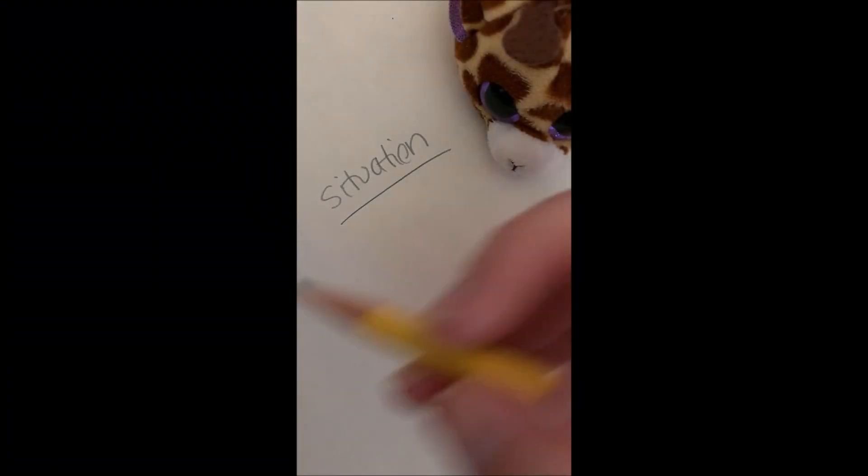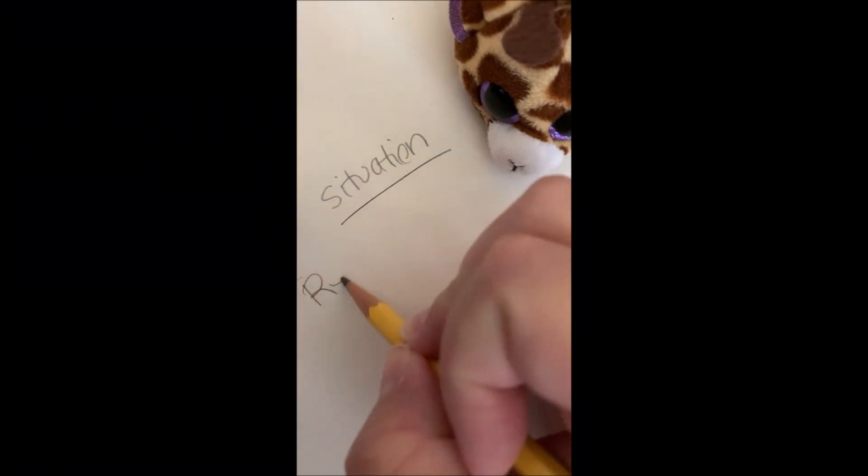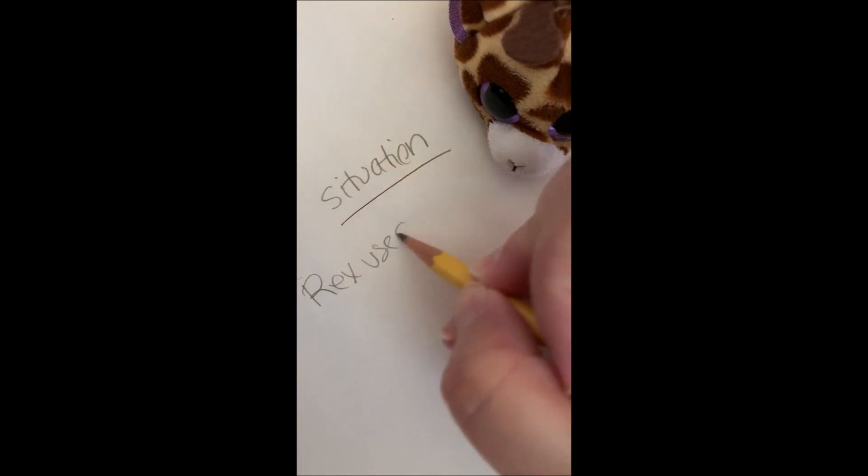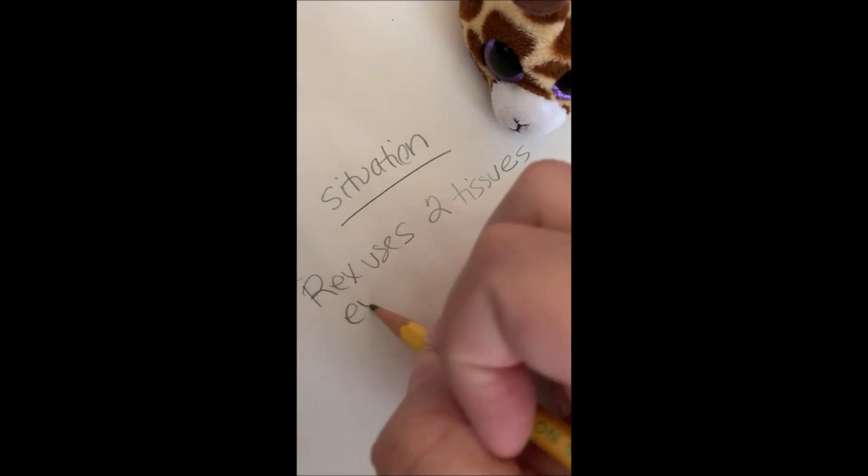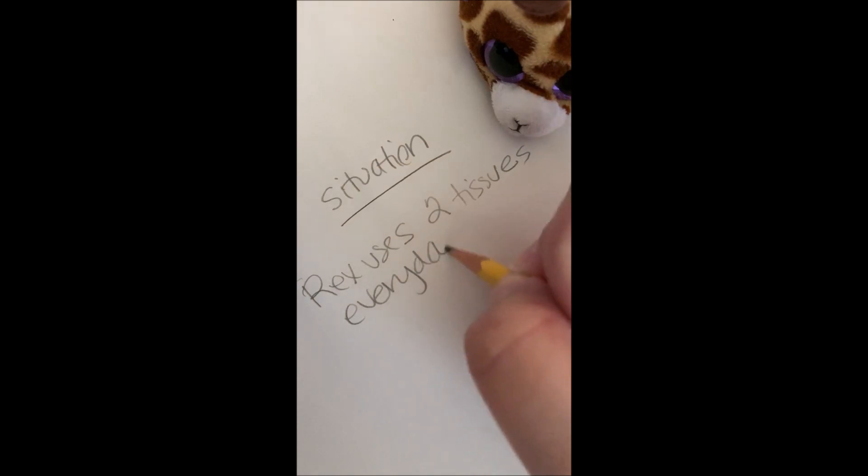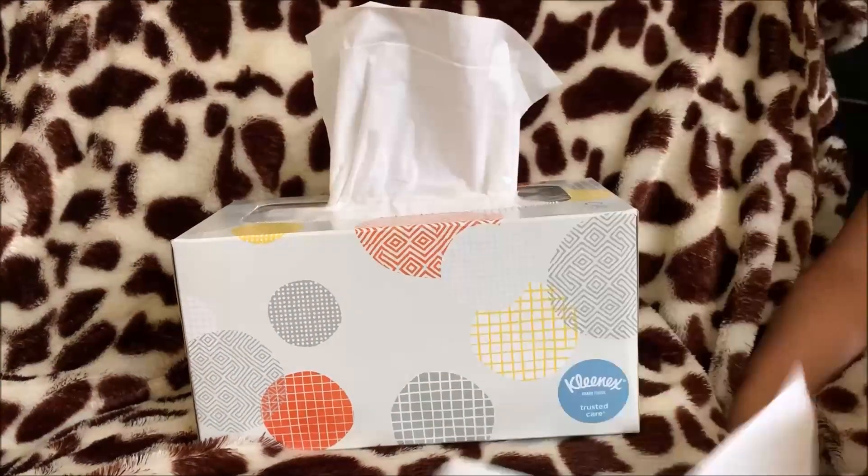So here's the situation. Rex uses two tissues every day. So how can we look at this data?